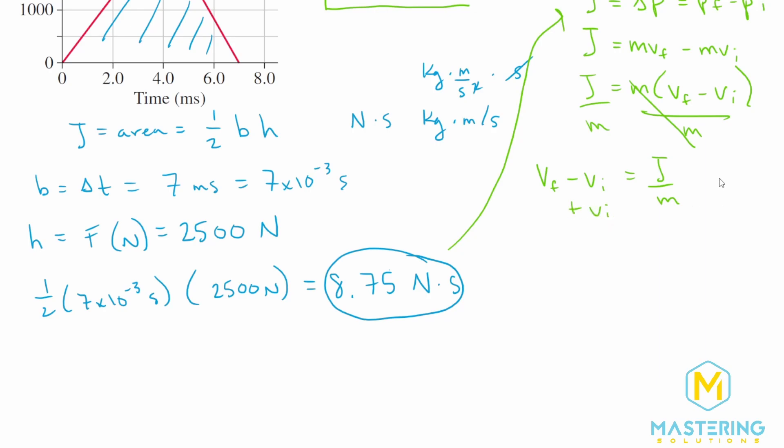Now we add v initial to both sides of the equation. So the final velocity is equal to the impulse divided by the mass plus the initial velocity. Now all we have to do is plug in our numbers. So v final is equal to our impulse, which we said was 8.75 kilograms times meters per second, divided by the mass, which is 0.43 kilograms. The kilograms will cancel out. And we add the initial velocity, which is negative 16 meters per second.